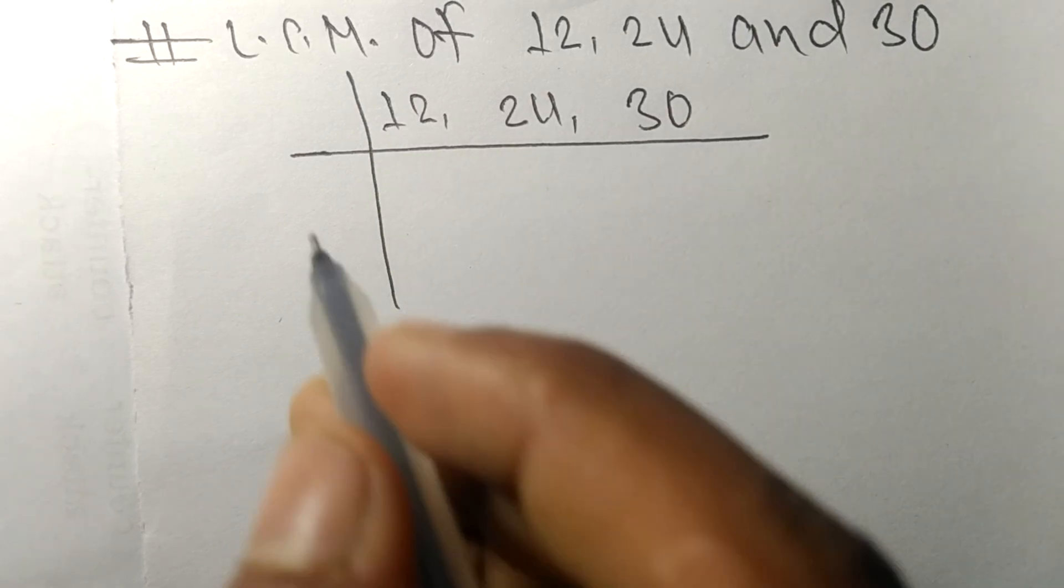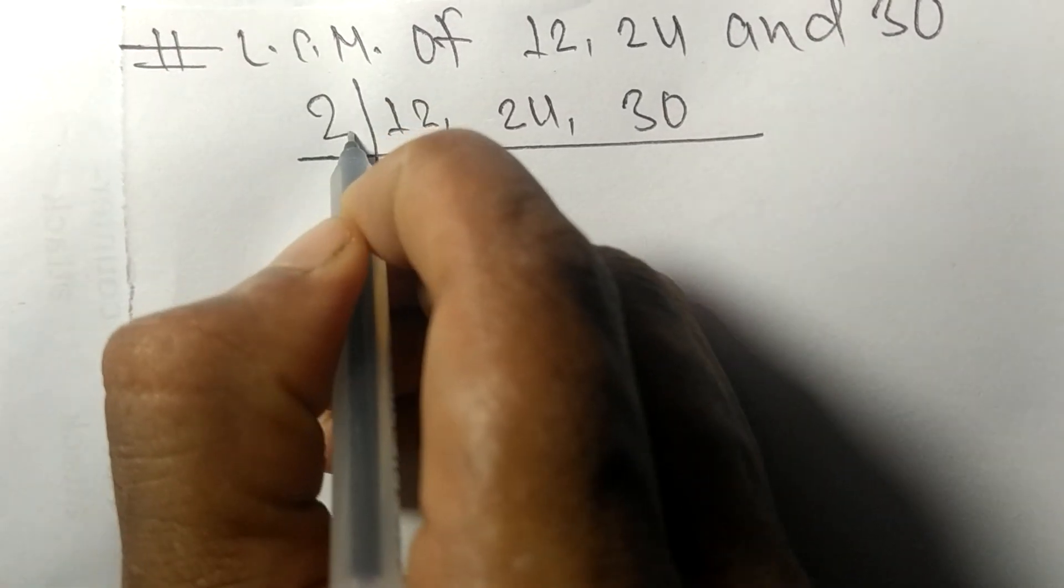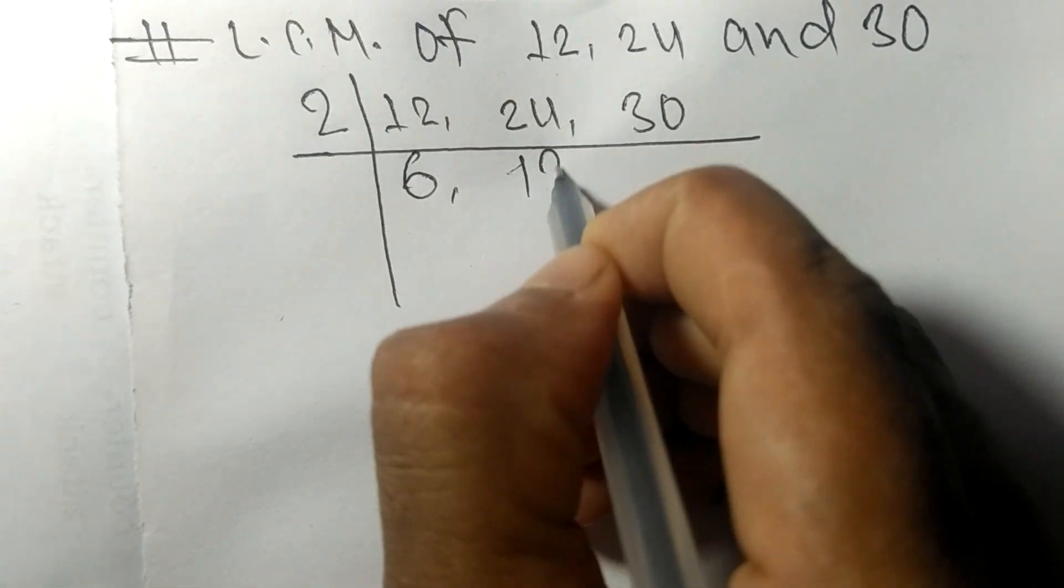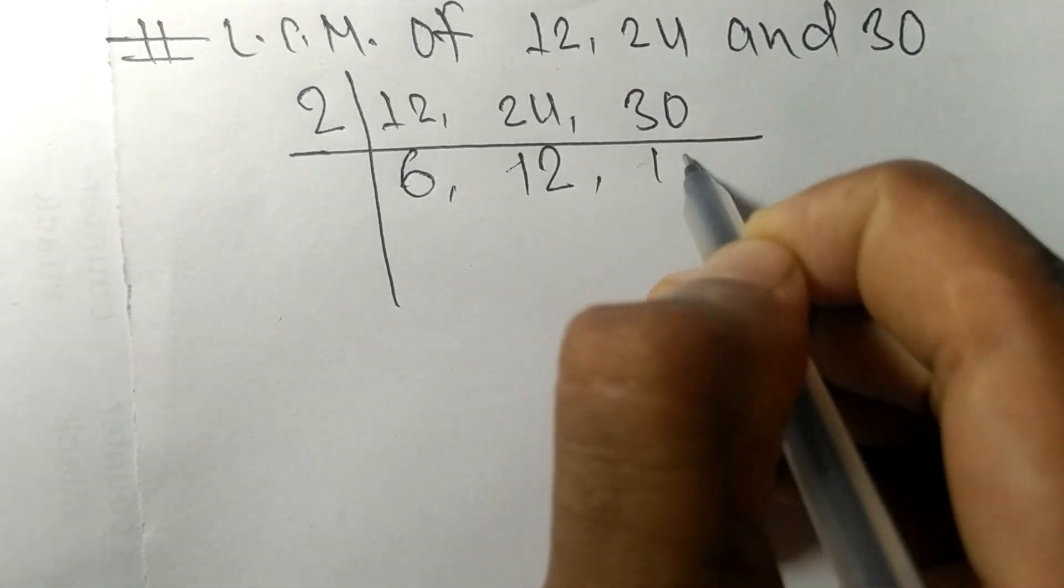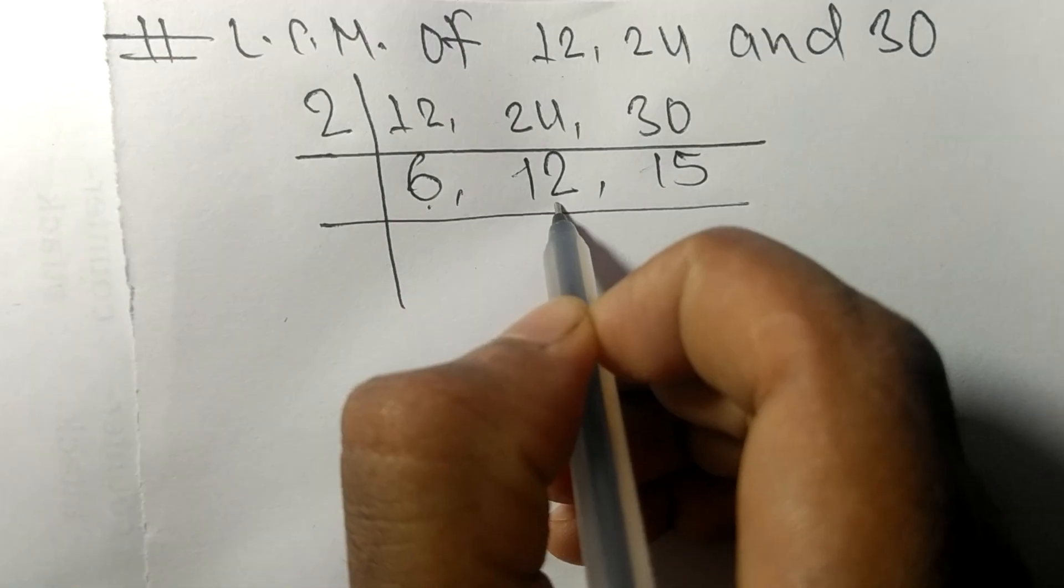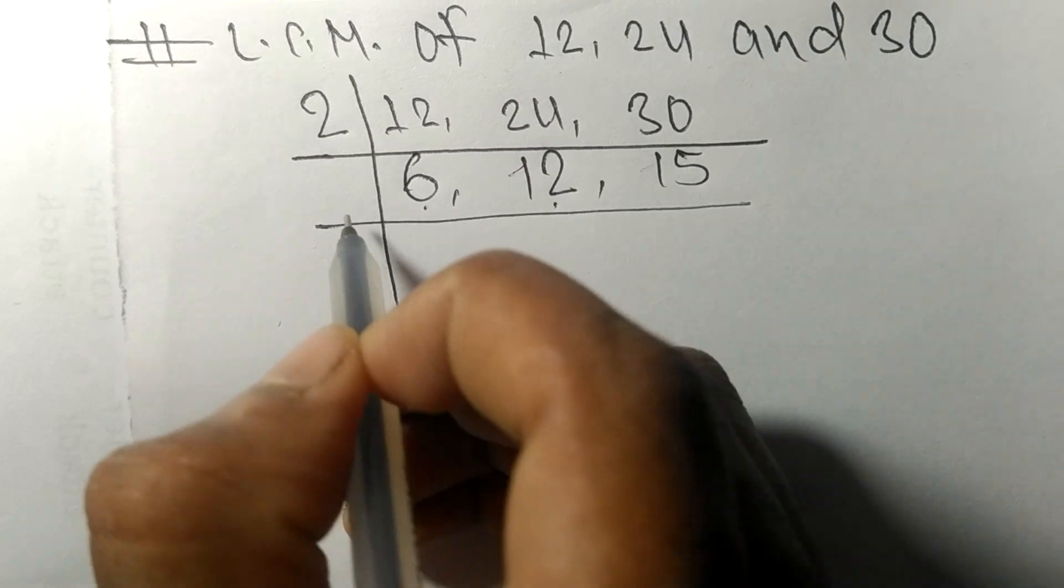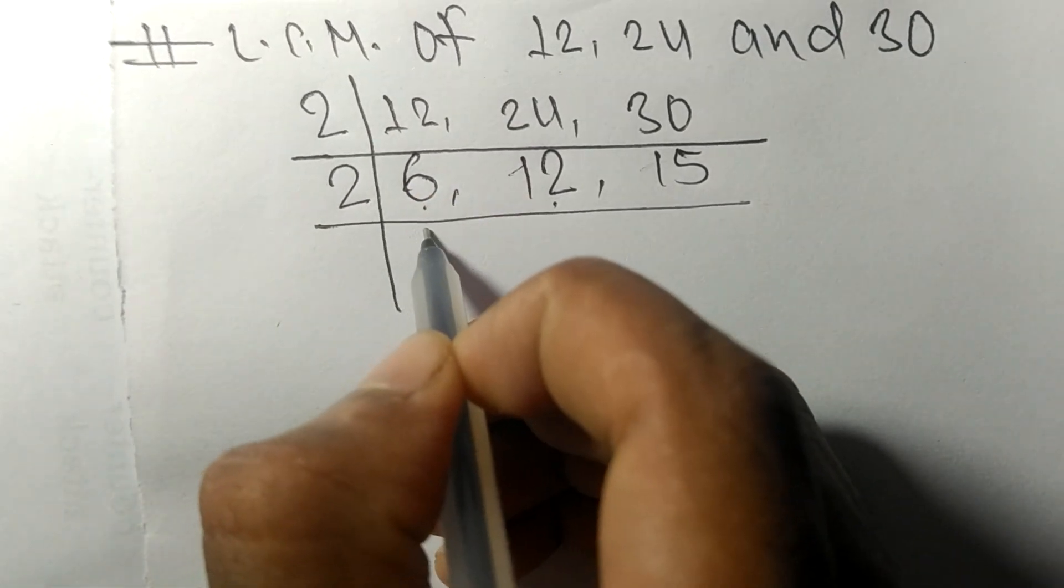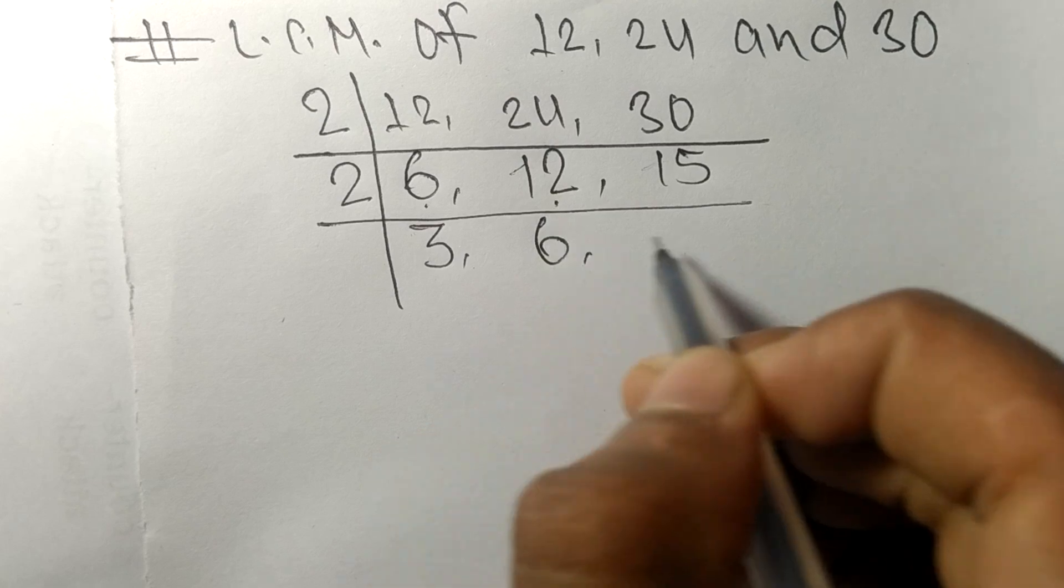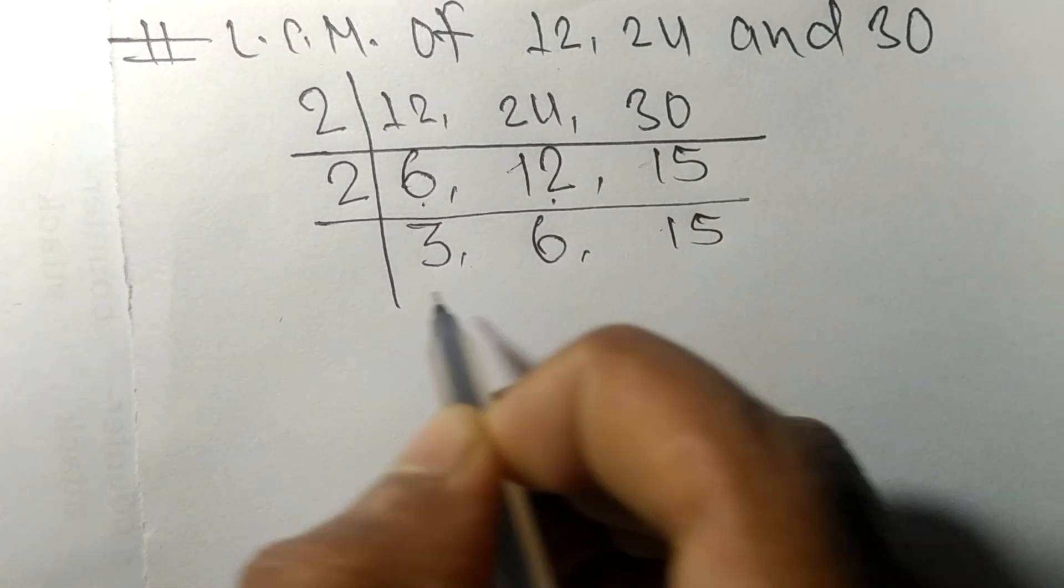All these numbers are exactly divisible by 2. 2 times 6 means 12, 2 times 12 means 24, 2 times 15 means 30. Now 6 and 12 are exactly divisible by 2. 2 times 3 means 6, 2 times 6 means 12, 15 not divisible, so it is same.